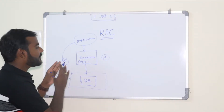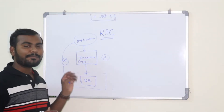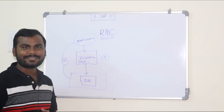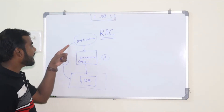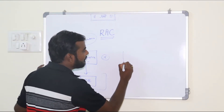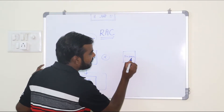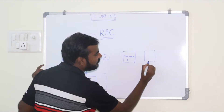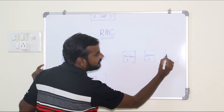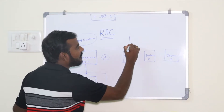Oracle's solution to this problem is called high availability. The idea is: can we have multiple instances so that if one instance goes down, we have another instance available, and the application can connect to the database through that instance? So the structure would be instance one, instance two, and instance three.